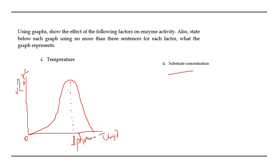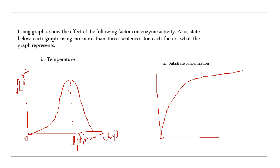For substrate concentration, it's a bit different. When you have an increase in substrate concentration, your rate of reaction will increase until all of your enzymes are saturated, so the graph tends to flatten out at that point. On this graph, the y-axis would be rate of reaction and the x-axis would be substrate concentration.